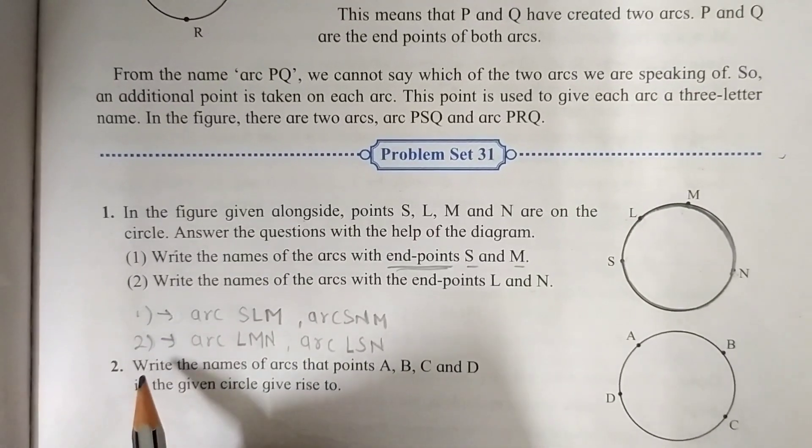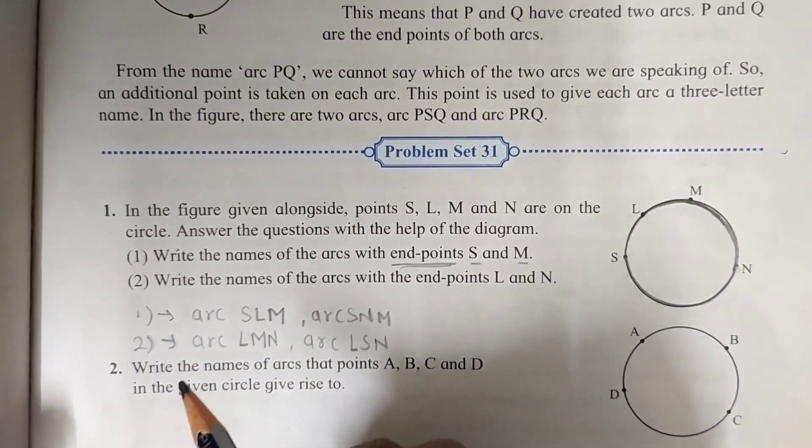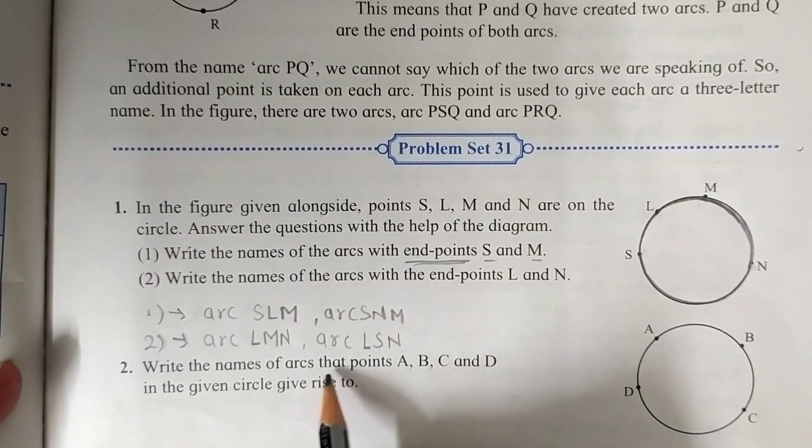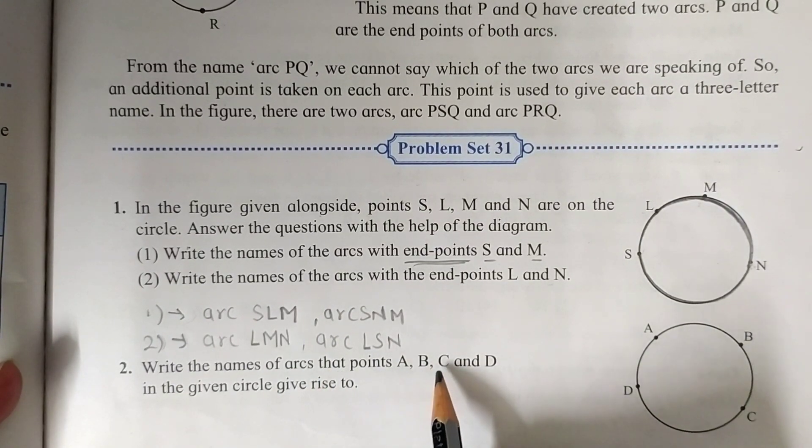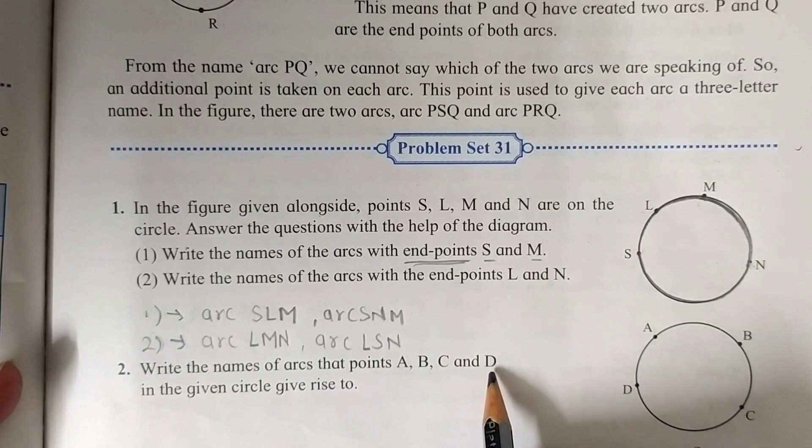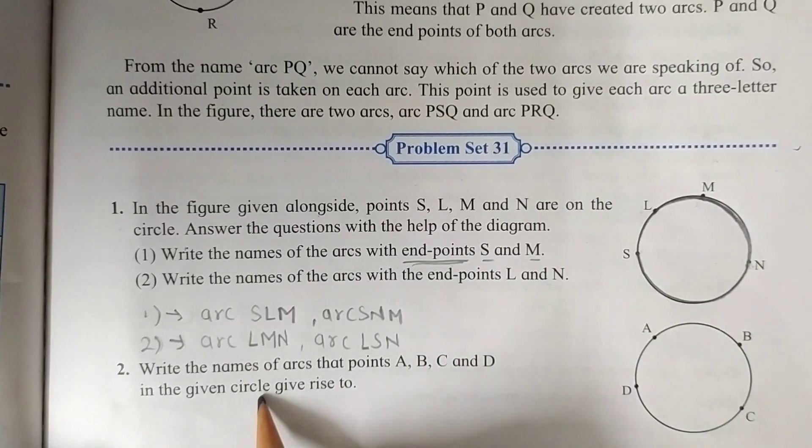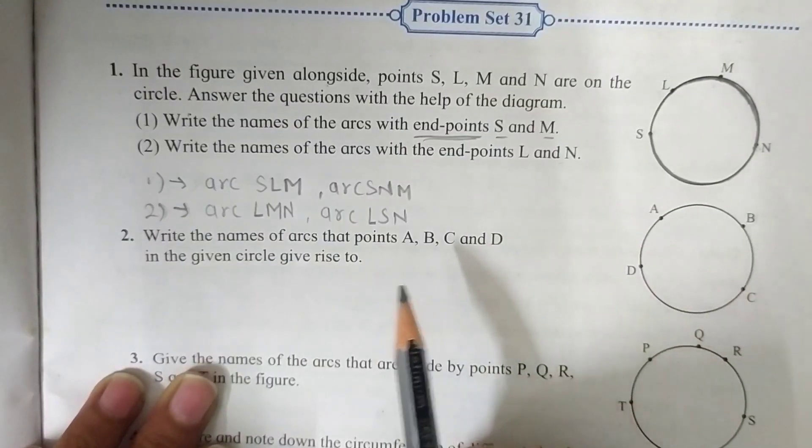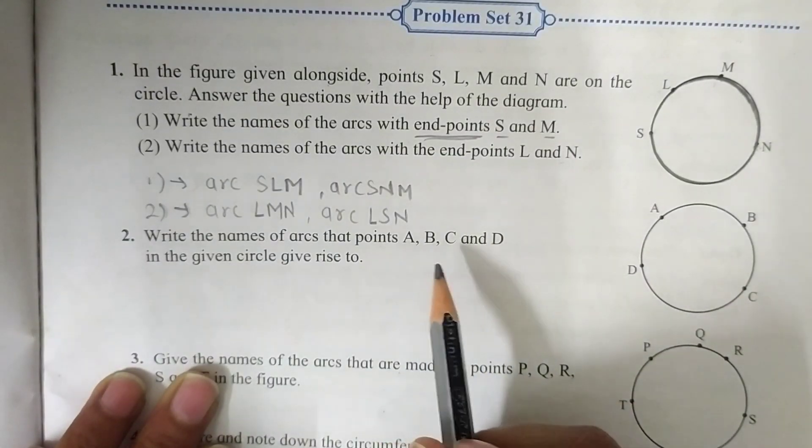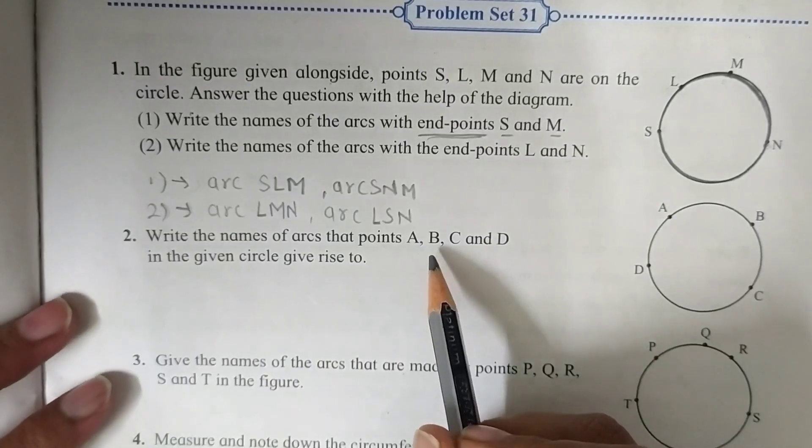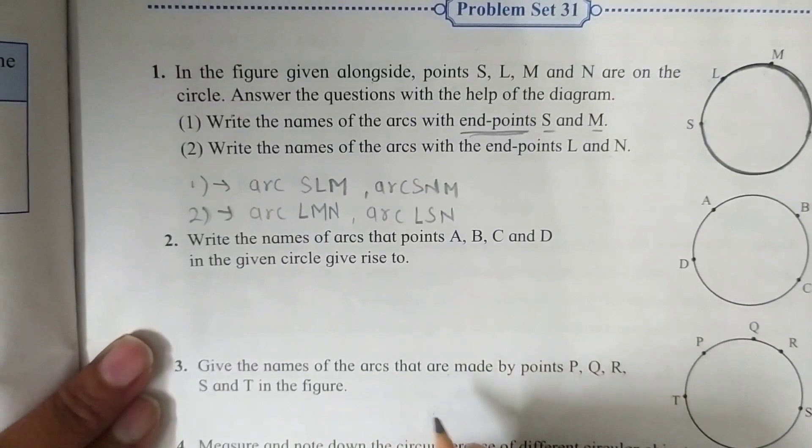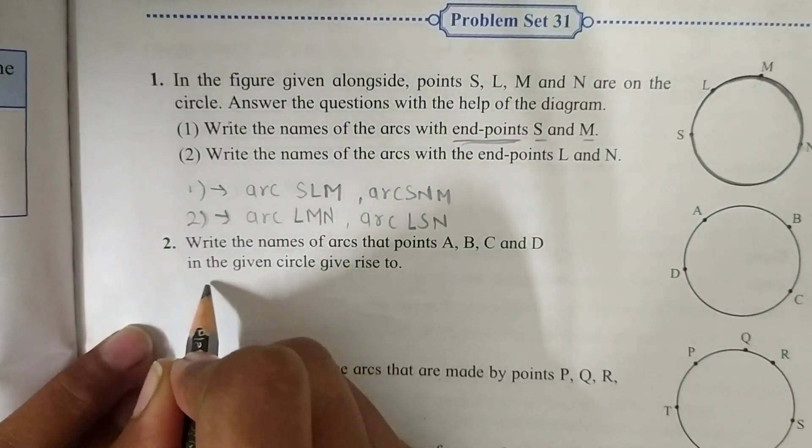Now the second question. The second question is write the names of arcs that points A, B, C and D in the given circle give rise to. Here we have to write the name of arcs that have different end points ending with A, B, C and D. Let's start to write here.